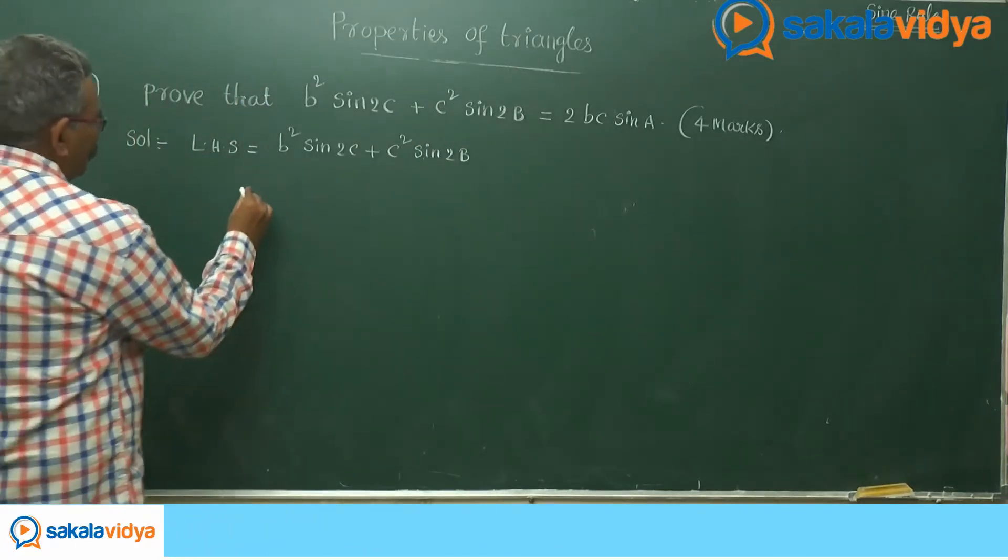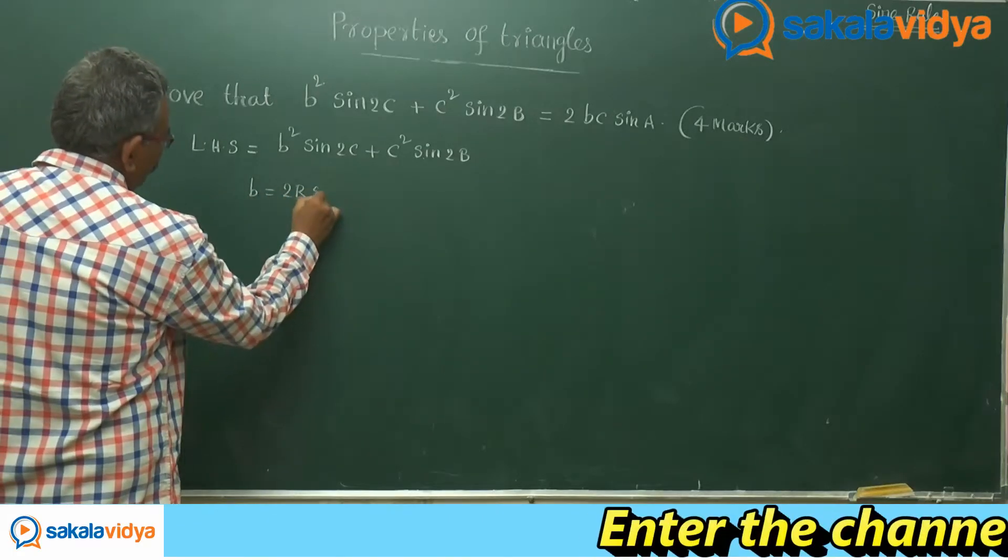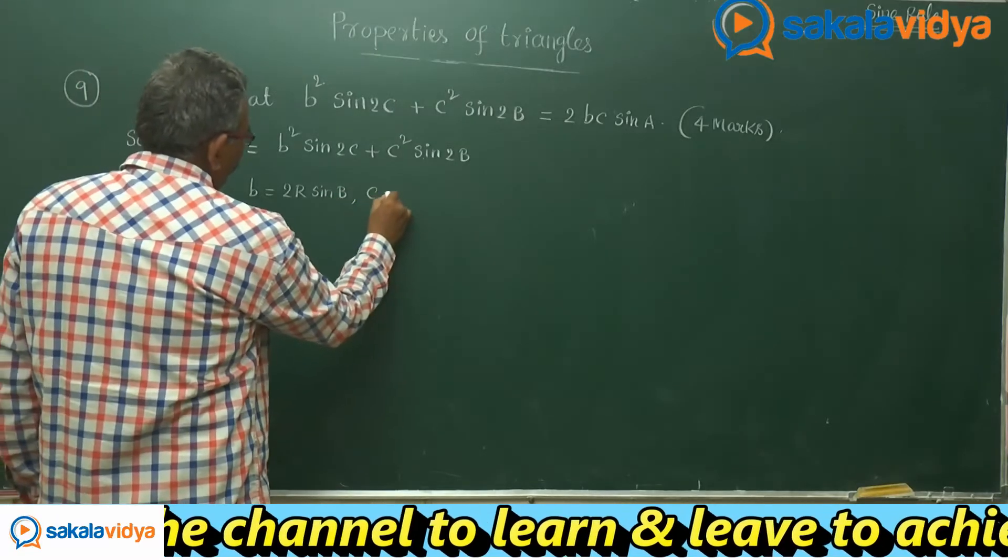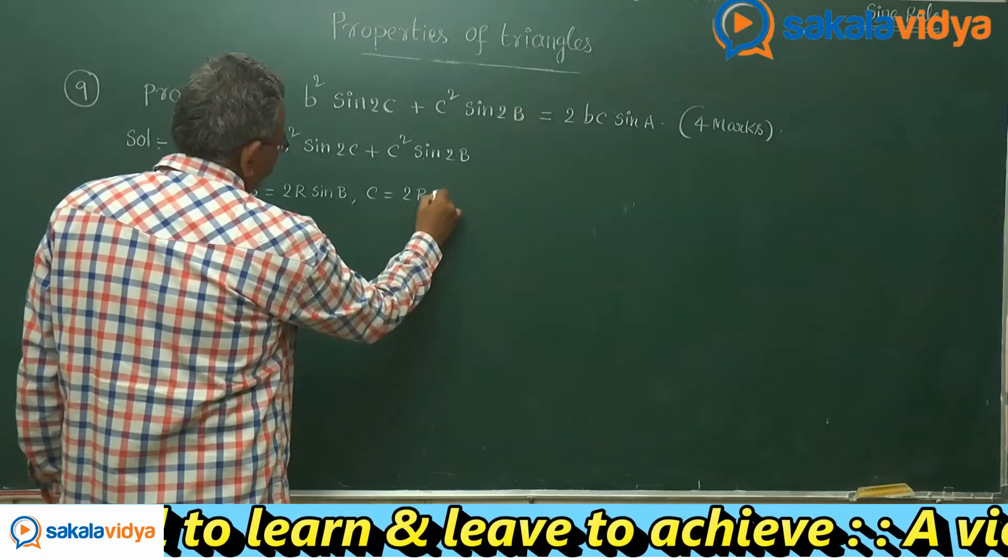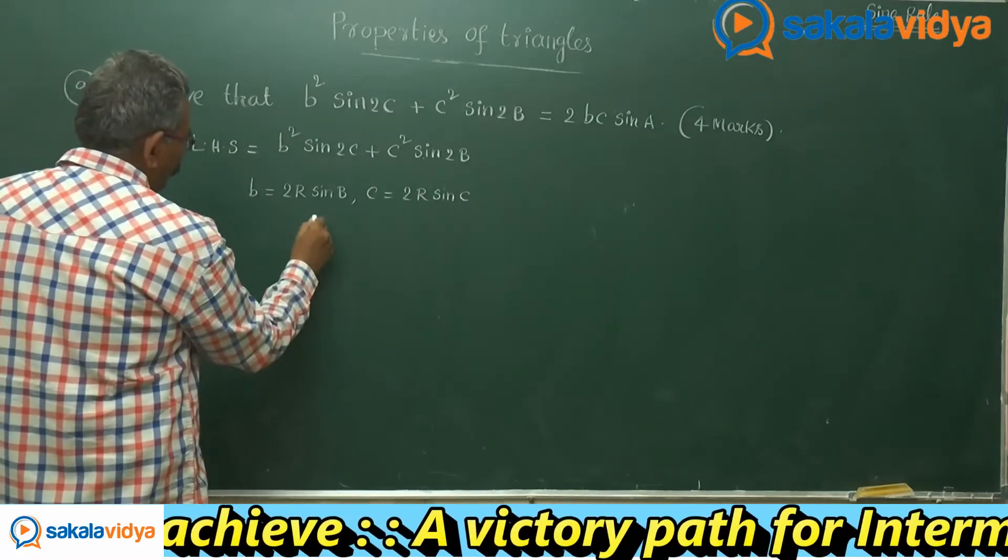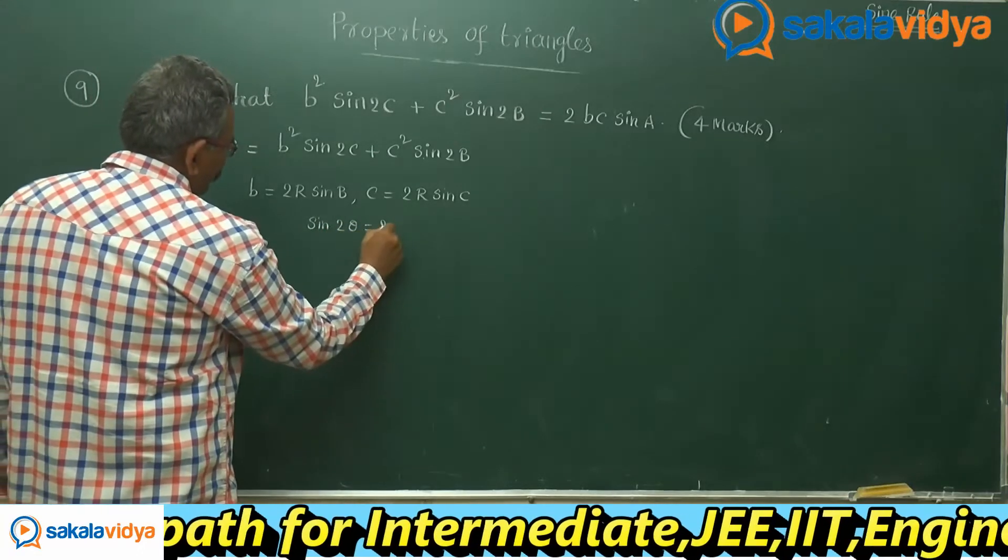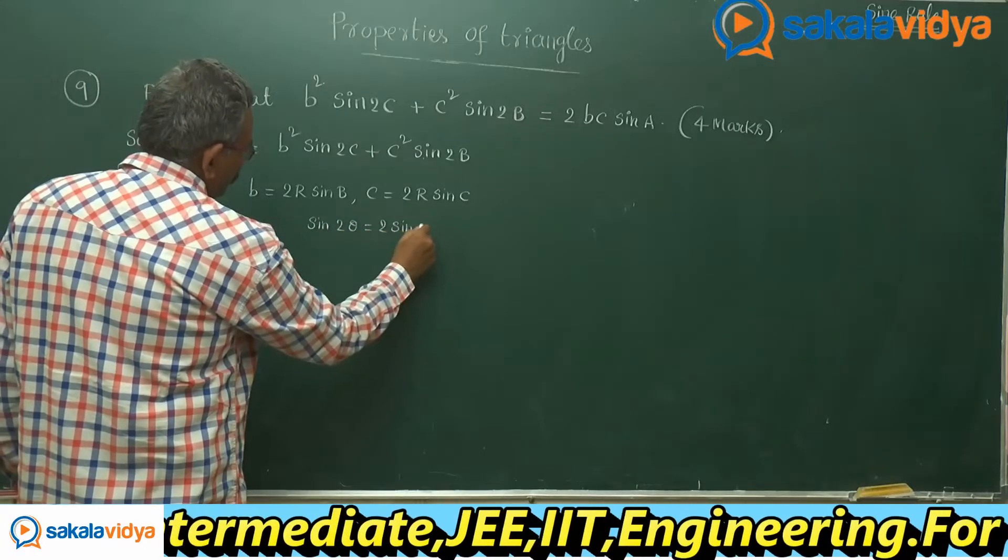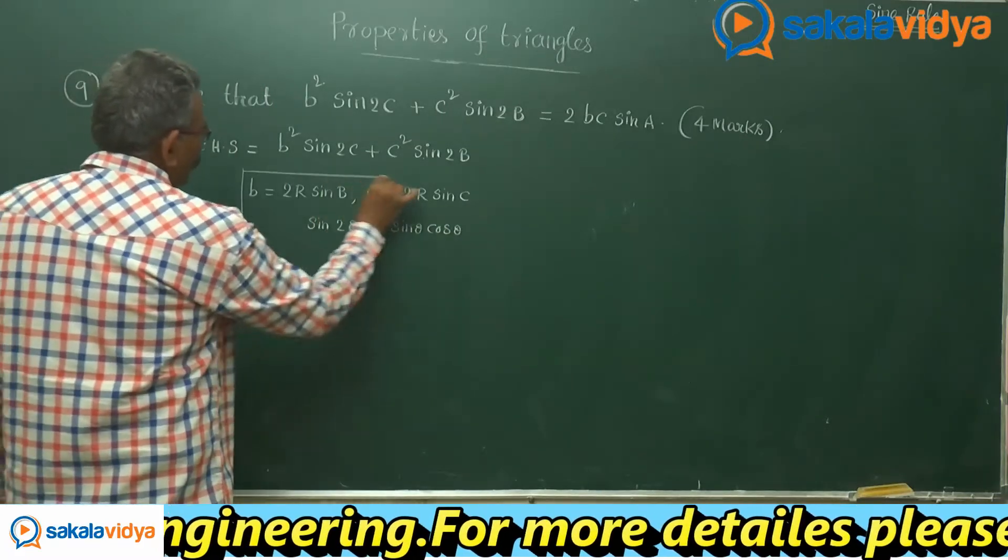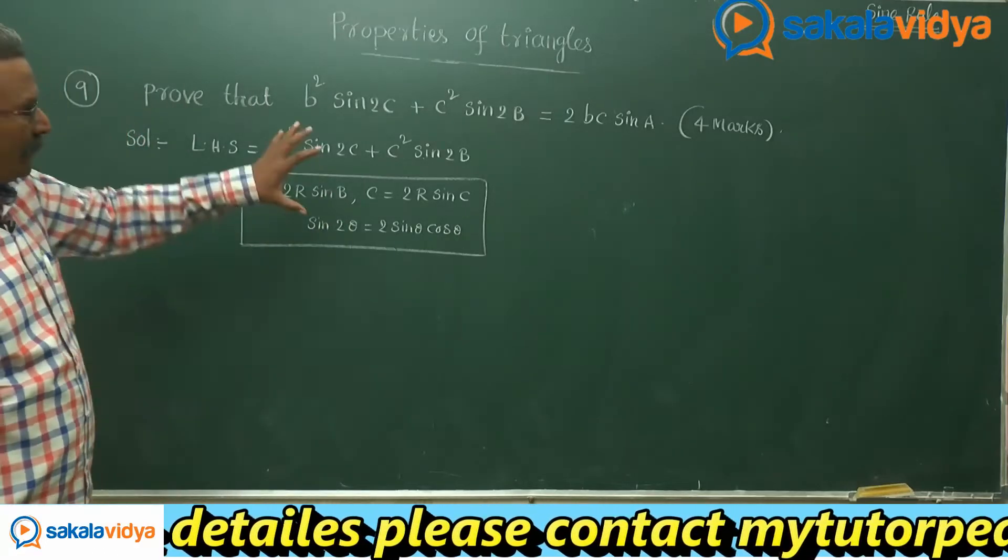Now b for 2r sin b, c for 2r sin c. And one more formula we have to recollect: sin 2 theta is equal to 2 sin theta cos theta. These formulae we have to keep in mind while solving this problem.